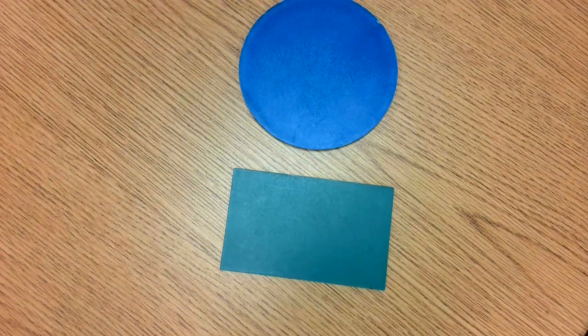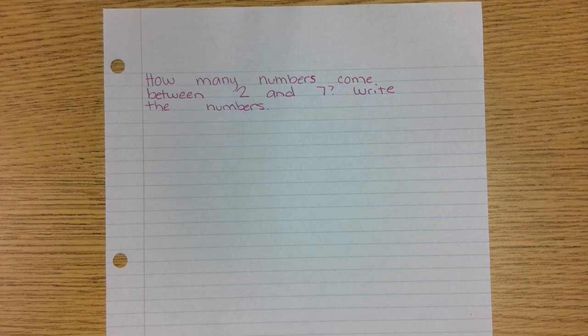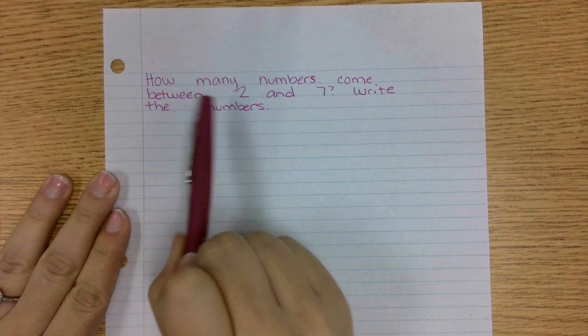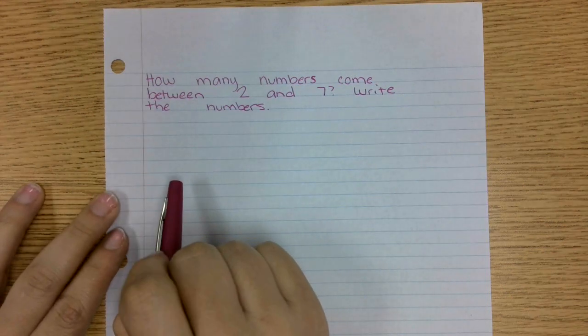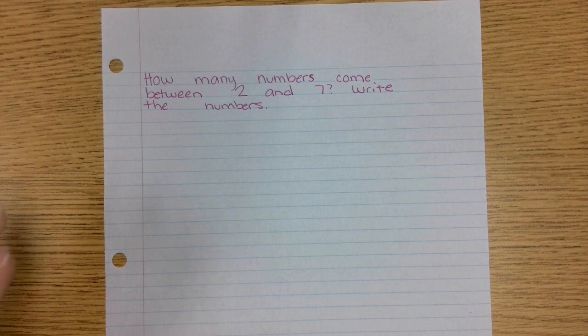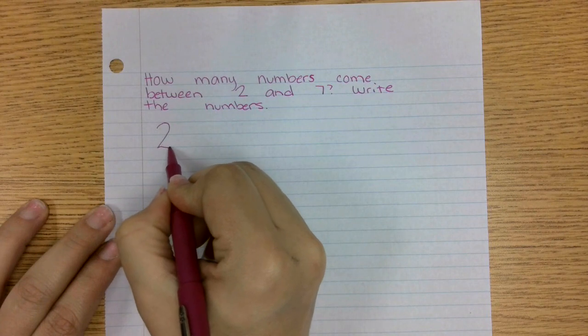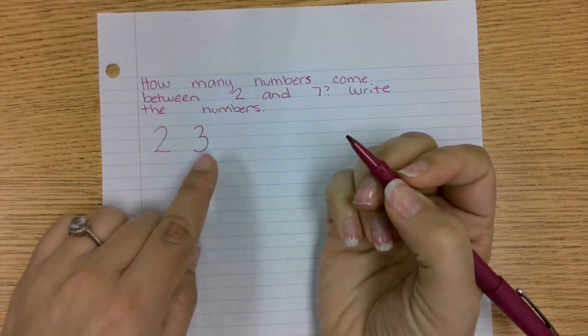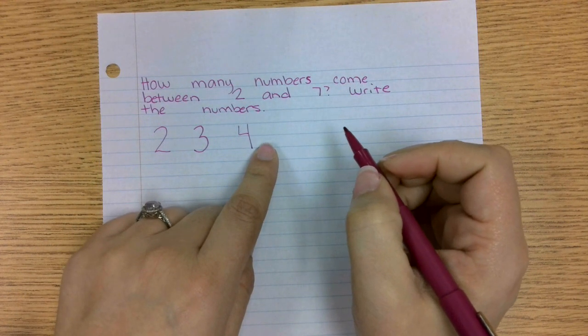Today for our math journal we have another word problem. Read it with me: how many numbers come between two and seven? Write the numbers. So to solve this I'm going to write all of the numbers from two to seven in a straight line like a number line. Write it with me on your pencil and paper or use your magic finger. First we have two. What comes after two? That's right, three. So we have two, three, four. And then what comes after four? Five.